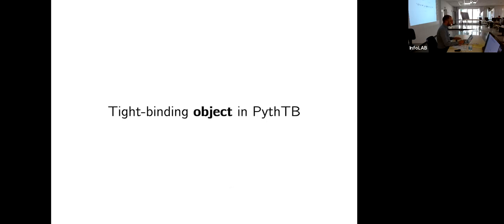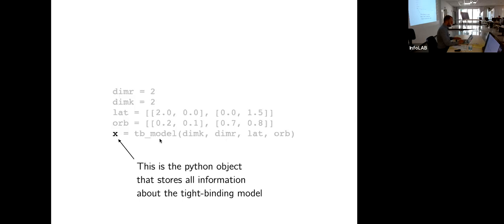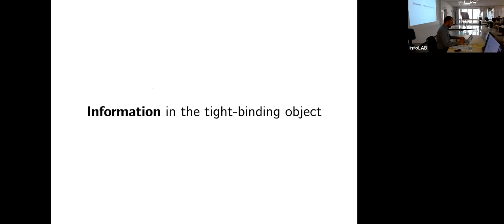So that's object-oriented programming. Now let me tell you about the object used to represent the tight-binding approximation. This little code specifies a simple tight-binding model. This x is not just a number — it contains all of the information you need about this tight-binding model. The question is: which information do you have to store in this x?